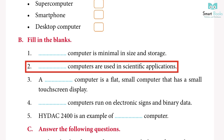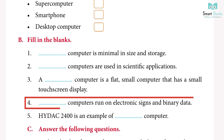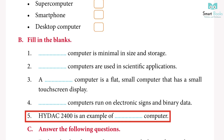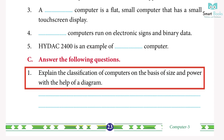3. A tablet computer is a flat, small computer that has a touchscreen display. 4. Digital computers run on electronic signals and binary data. 5. HiTec 2400 is an example of a hybrid computer.